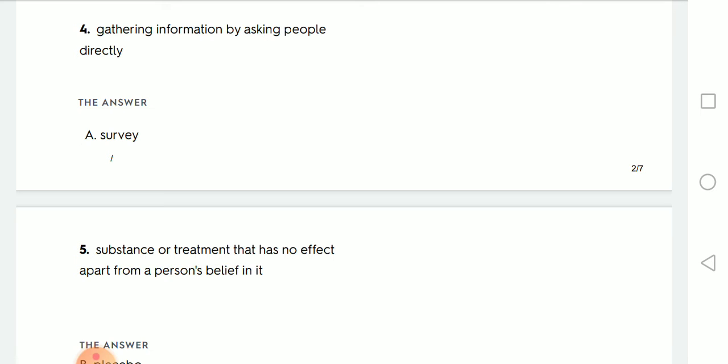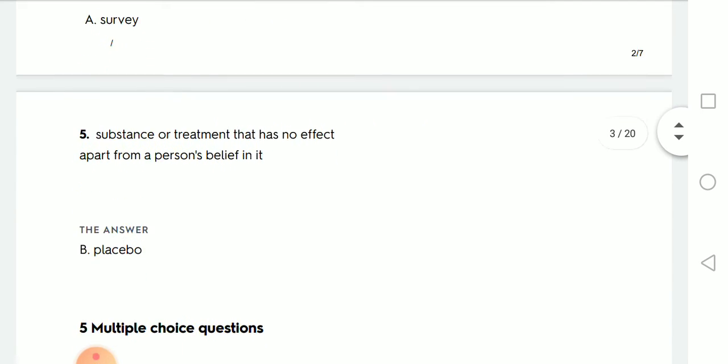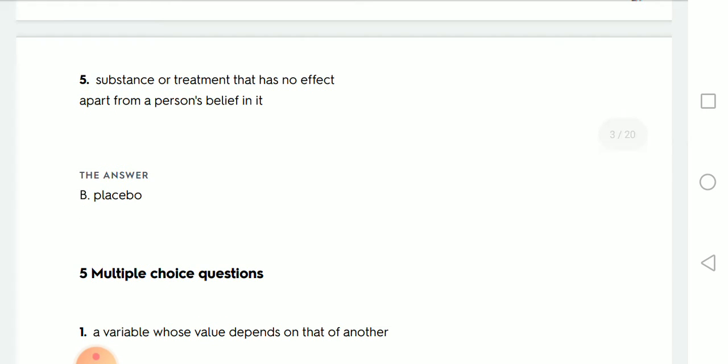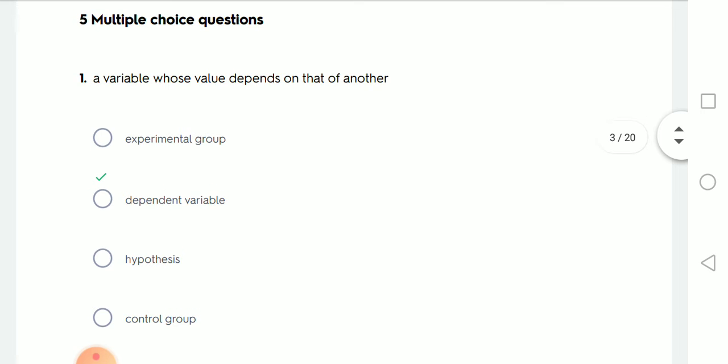Substance or treatment has no effect apart from a person's belief in it. No effect, illusion like this, it's what? Is the placebo. You remember the drug? A variable whose value depends on that of another variable, depends on another, dependent variable.